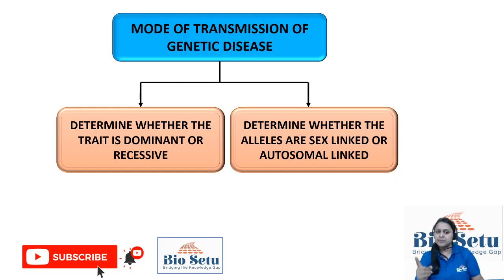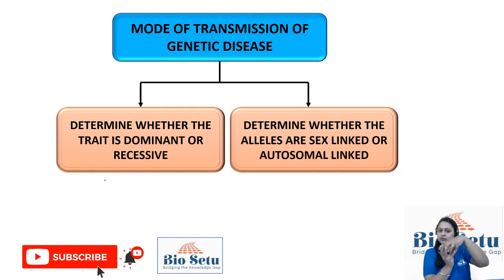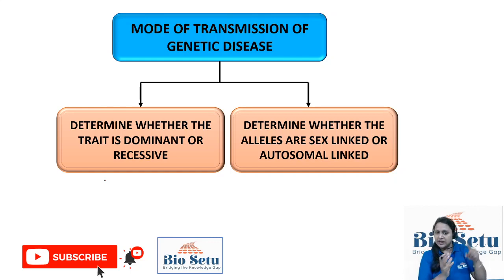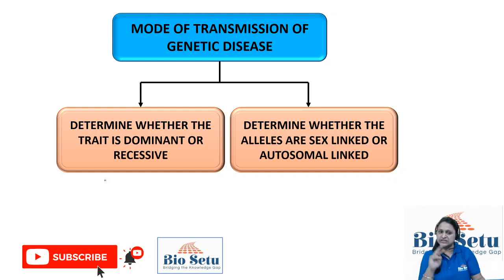One is the gene that is responsible for creating the mutation or damage, and the other is the chromosome that carries it — like a person sitting in a cab traveling from one place to another. So first we understand who the gene is, and then we understand where it is sitting, meaning which chromosome it is on.